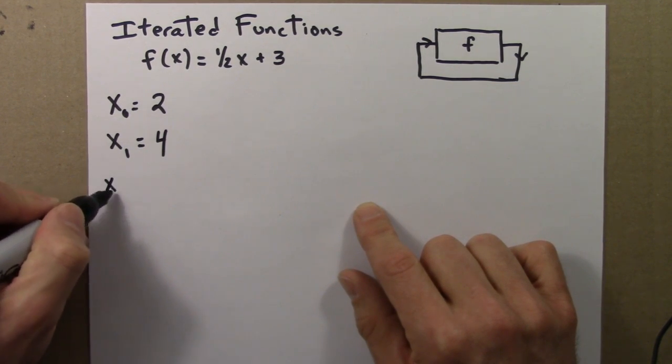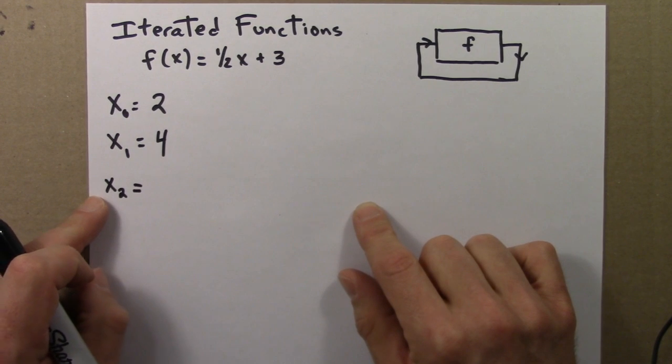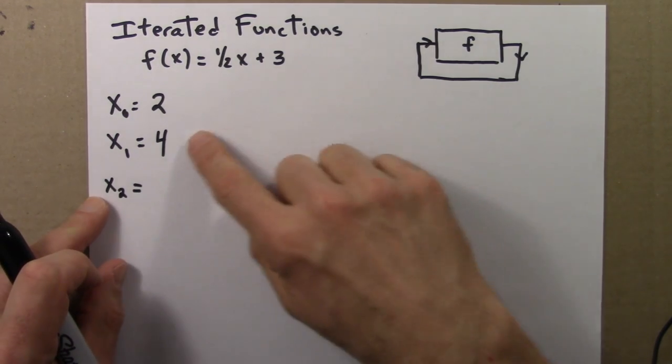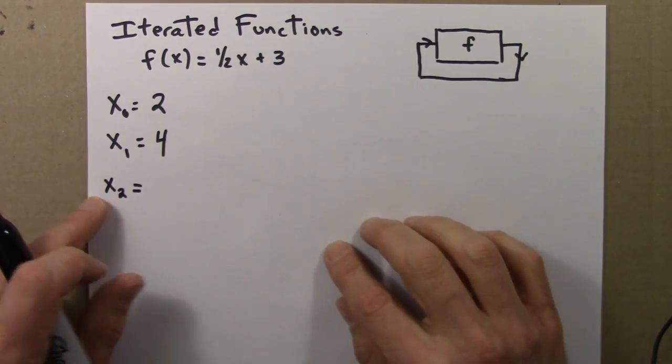What's the next value? x₂, the second iterate. The function tells me I apply the function to 4. Half of 4 is 2, 2 plus 3 is 5.